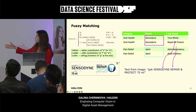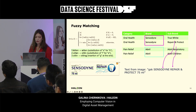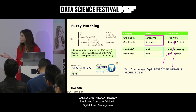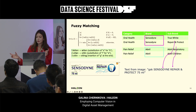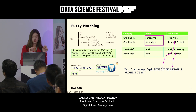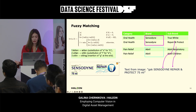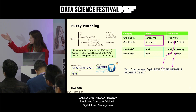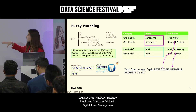Levenshtein distance — you can see the formula on the slide. For example, to change the word 'kitten' to 'sitting', you do it in three iterations: substitute S for K, then I for E, then insert G at the end. That's a Levenshtein distance of three. We have a threshold, and then we choose our sub-brand and populate it in the metadata.